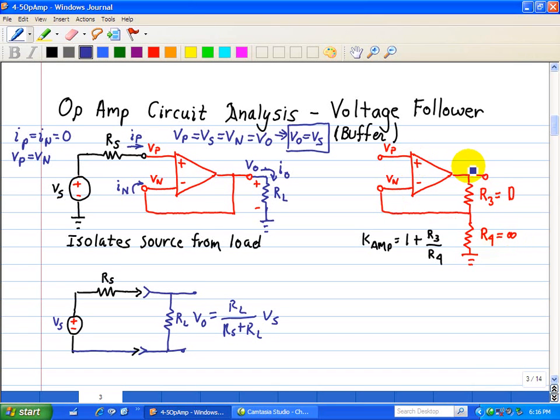Now for a non-inverting op-amp, its gain is equal to 1 plus R3 over R4, shown in this circuit. Well, when you substitute 0 in here, we see that we get 1, and that's the case. So the gain of the voltage follower has a gain of 1. So k-amp for voltage follower has a gain of 1.